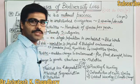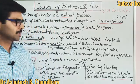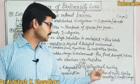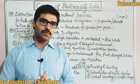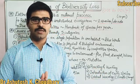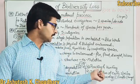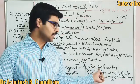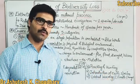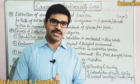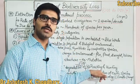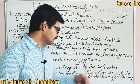The fourth cause is poaching or hunting. Poaching means the illegal transfer of animals from one area to another for economic benefits. Hunting is also done for economic benefits or for meat and flesh. So this is also a main reason for biodiversity loss.